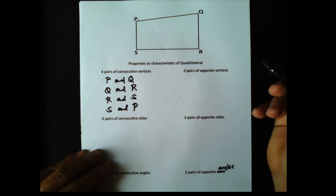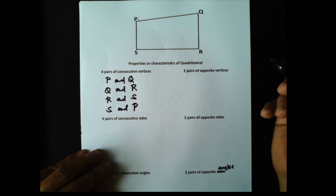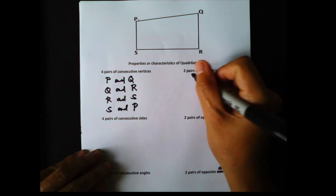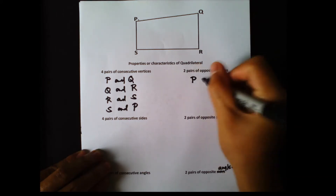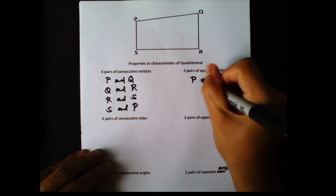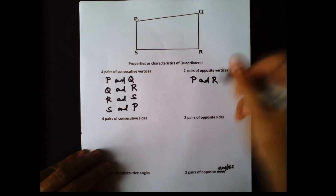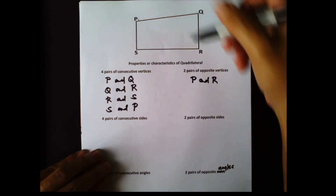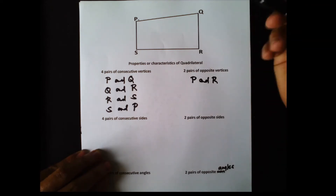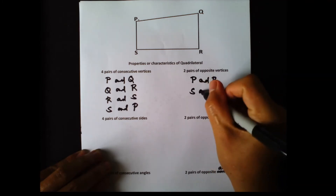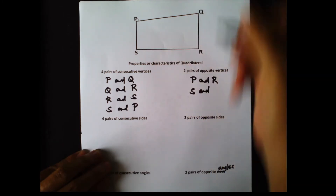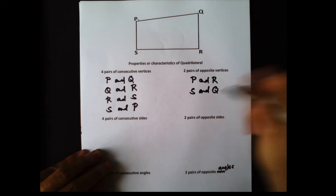Now let's look for the opposite vertices. The first pair: vertex P is opposite to vertex R. The second pair: vertex S is opposite to vertex Q. Those are the 2 pairs of opposite vertices.